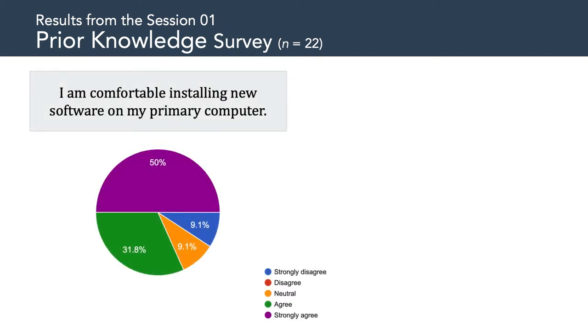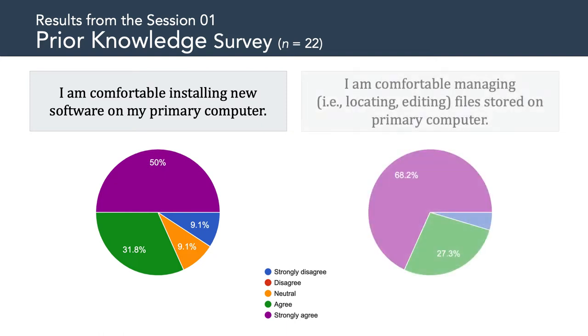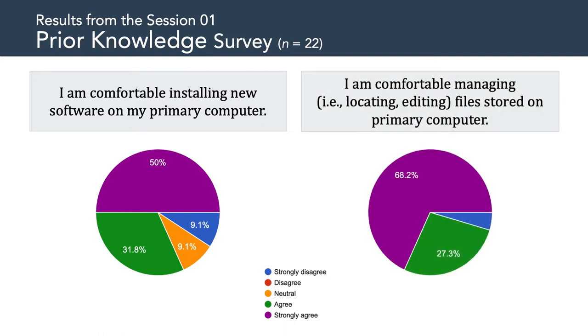So keep that in mind as we move forward. So next up, we have the prior knowledge survey. All in all, 22 of you completed the survey, so let's take a look at the results. The vast majority of you are comfortable installing new software on your computers and managing your files. Not surprisingly, these are important skills when it comes to producing interactive media, as we'll need to be able to keep track of source files and know where to put them when we want to share our work with others. Now, don't panic if you're one of the people who disagreed with these items. I'll be here to guide you as needed when things get a bit more technical.